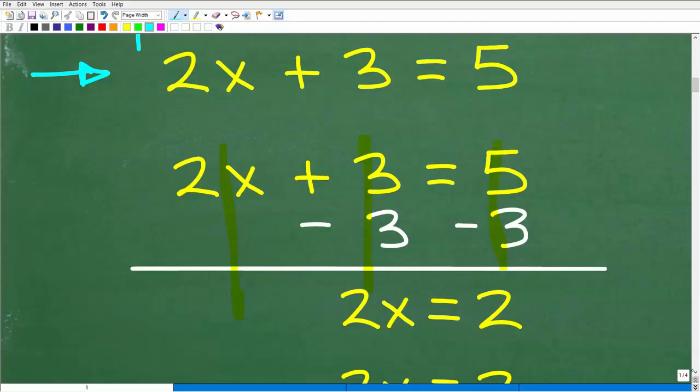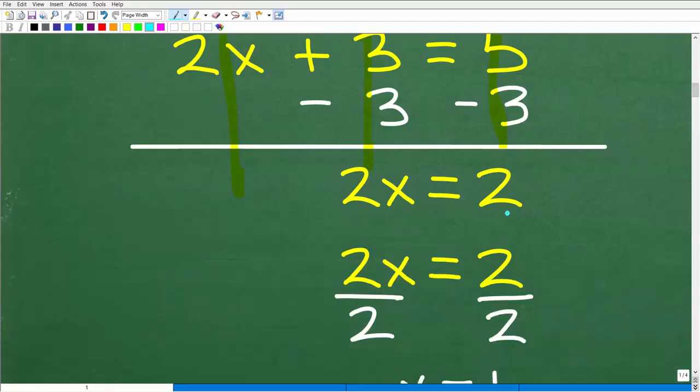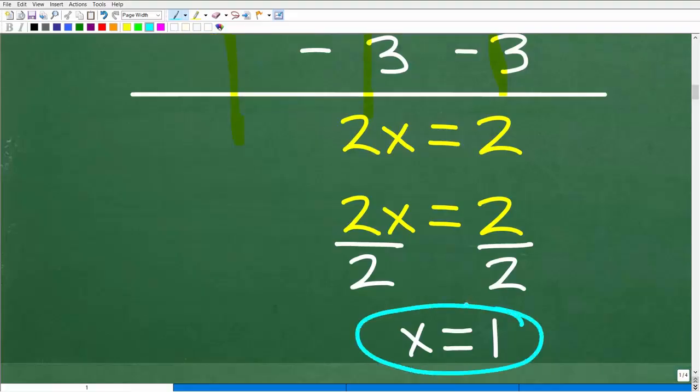Remember the golden rule in algebra is whatever you do to one side of the equation you can do whatever you want as long as you do it to both sides of the equation. That's the cool thing about algebra. So we're going to subtract three from both sides of the equation. Then we're going to add down in a column manner. And we're going to end up with 2x is equal to five minus three, which of course is two.